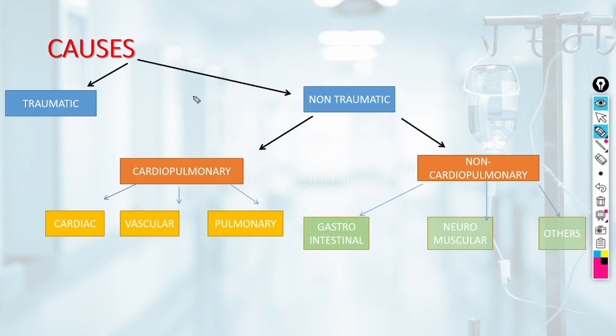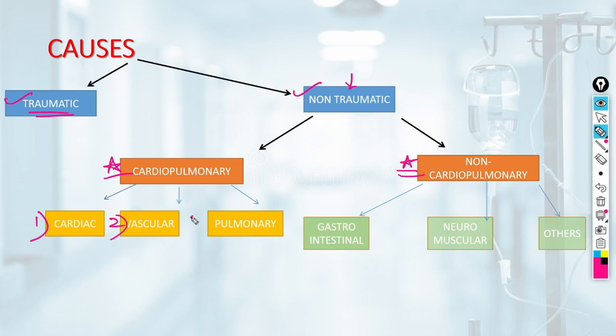The causes of chest pain can be divided into traumatic and non-traumatic causes. We will focus on non-traumatic causes presenting to the emergency department. These can be divided into cardiopulmonary causes — which include cardiac, vascular, and pulmonary — and non-cardiopulmonary causes, which include gastrointestinal, neuromuscular, and others. The most common are gastrointestinal causes, followed by cardiac.